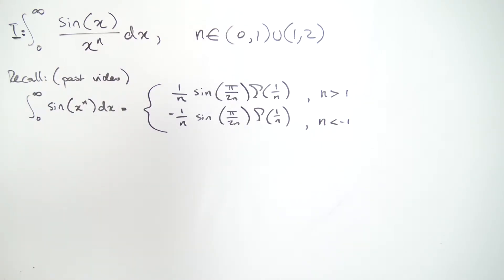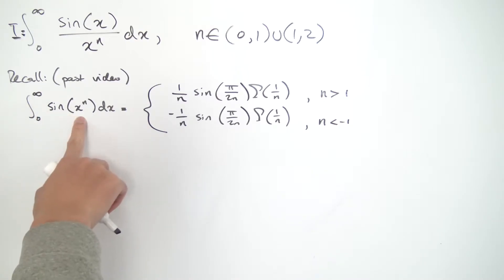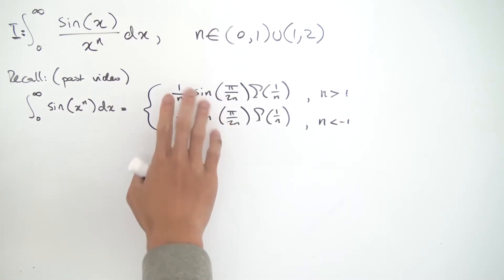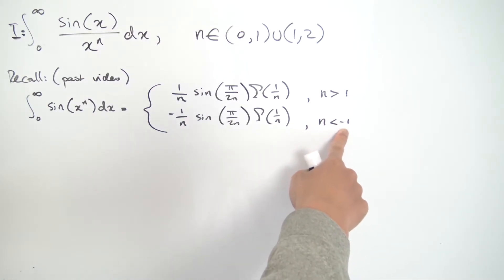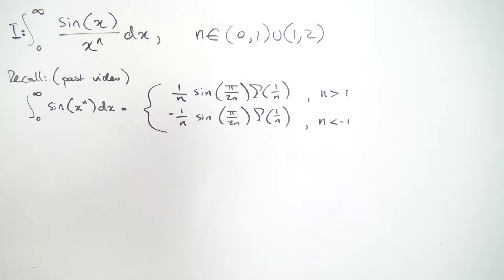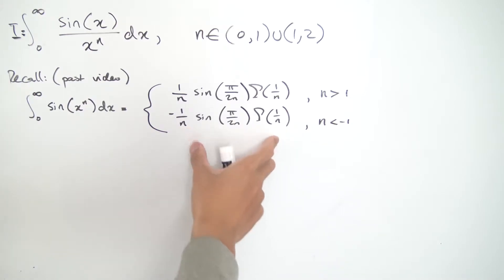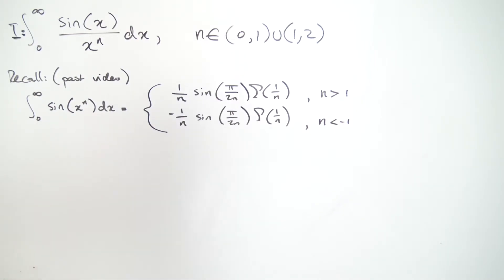To evaluate this integral we're going to use a past result. In a previous video I showed that the integral from 0 to infinity of sin(x^n) dx equals a known expression for n greater than 1. Using Mellin transforms, one can also show it works for negative n values, where a negative sign is introduced at the front to keep the whole expression positive. I called that video the generalized Fresnel integral — you can find the proof using complex analysis.